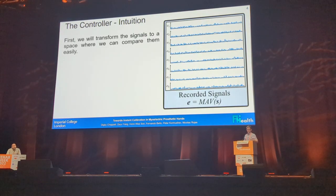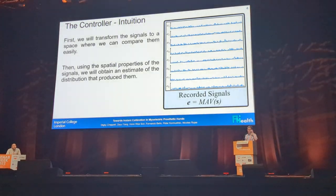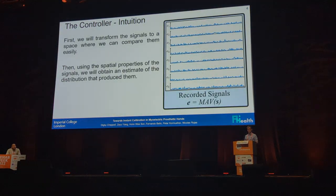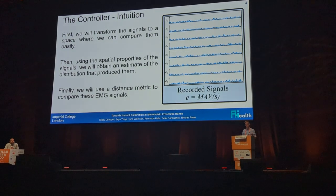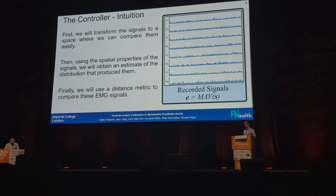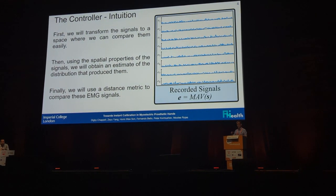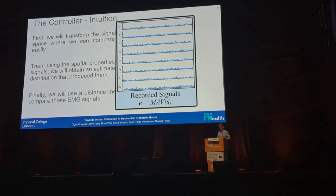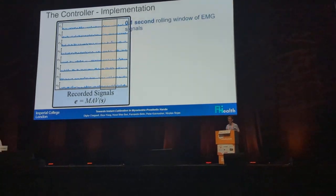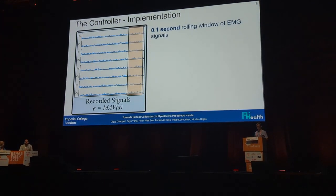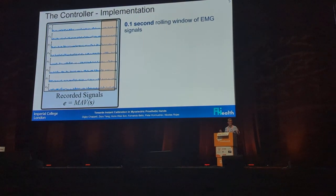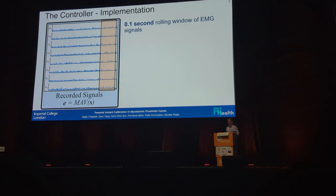So what we're going to do is first transform the signals to a space where we can compare them easily, then use the spatial properties of the signals to obtain an estimate of the distribution that produced them, and then use that distribution to calculate a distance metric between the EMG we're seeing now and the EMG we've got in the reference. We take a 0.1 second rolling window of EMG signals — that's all we need, not 10 hours of data, just 0.1 seconds.